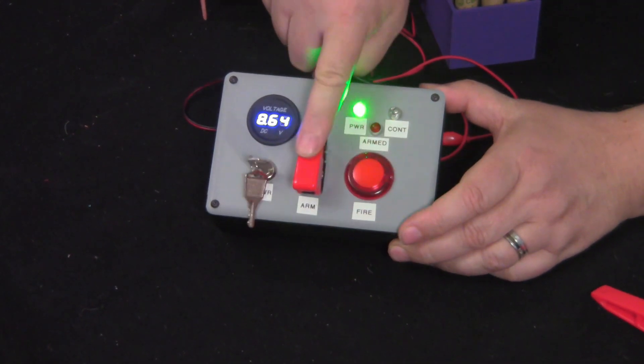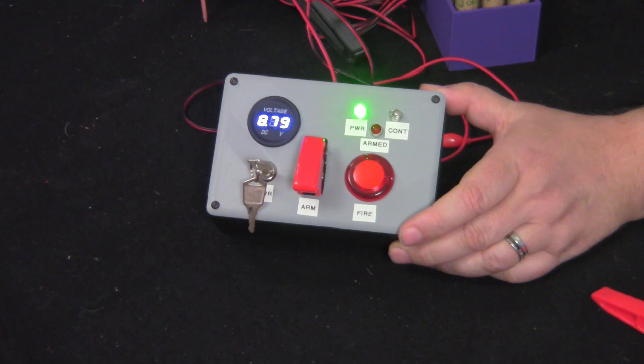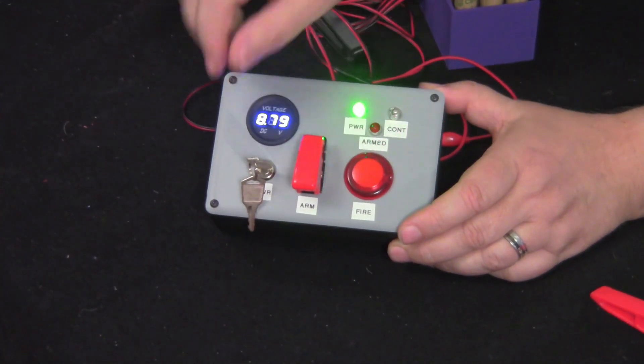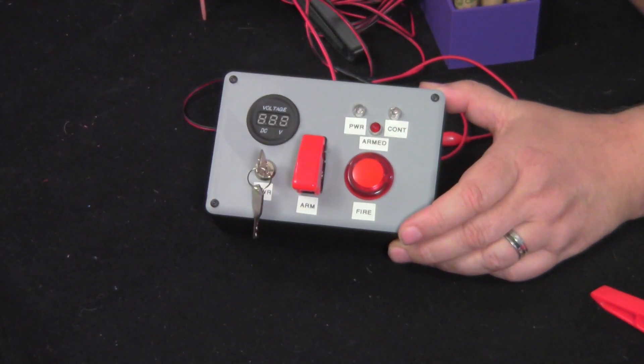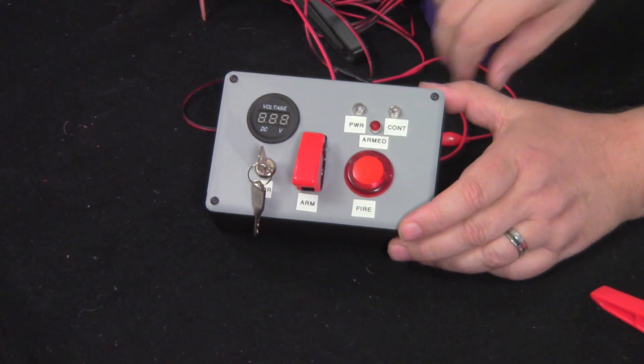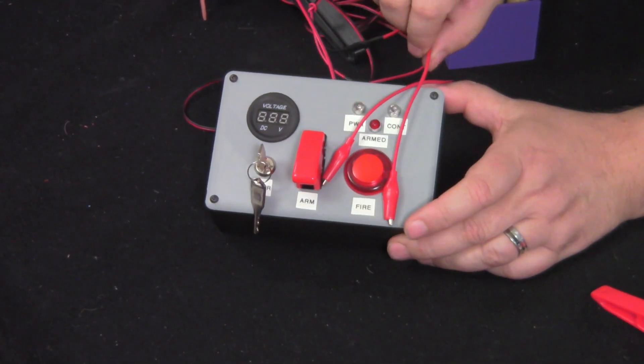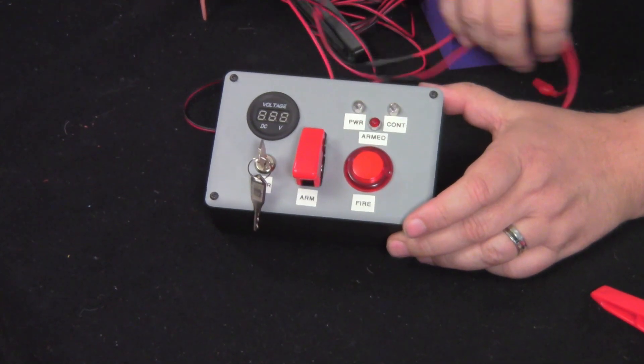Once you've fired your rocket, you close down the fire key. That's kind of a safety, and you always want to turn it off so that you've got no power going out to your leads that connect to your igniters.